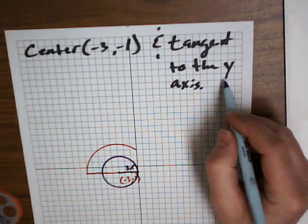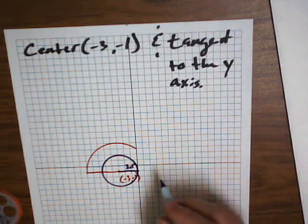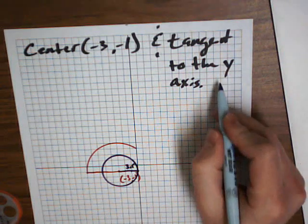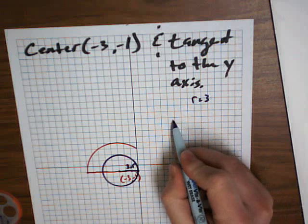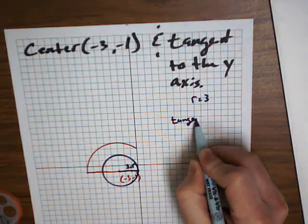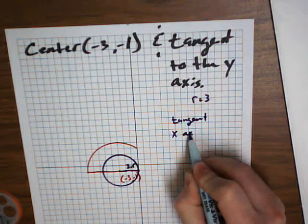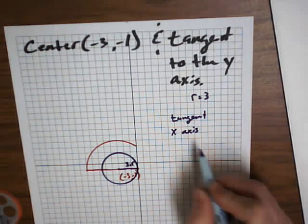Or you count if this turned into the x-axis. So for instance, for the y-axis, the radius is 3. What if it was tangent to the x-axis? It'd be 1.